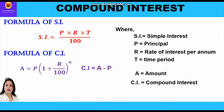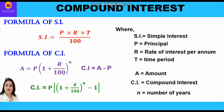Alternatively, we can use the direct compound interest formula: CI = P × [(1 + R/100)^n − 1], where n stands for number of years.